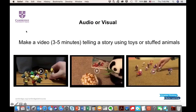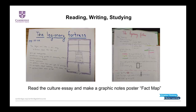My next category after artistic modes is reading, writing, and studying — the more obvious types of assignments. One thing I started doing a few years ago is having students read the culture essay and make a graphic notes poster, which I call a 'fact map,' instead of just taking old-fashioned notes. I noticed that students started scoring much better on tests when they had actually created something on the content — a very successful homework assignment.